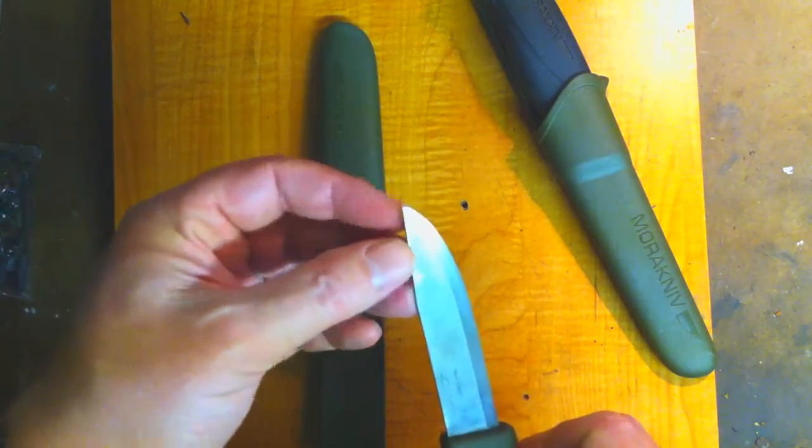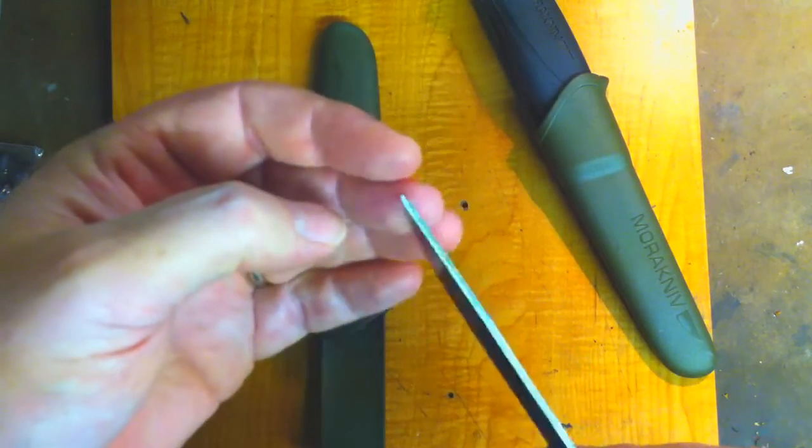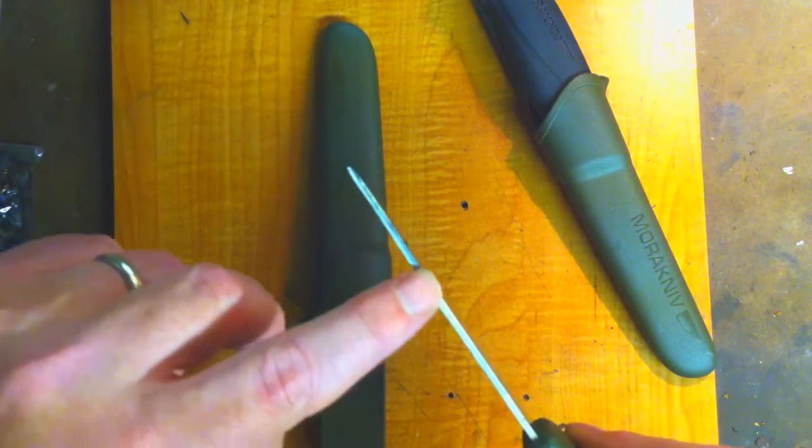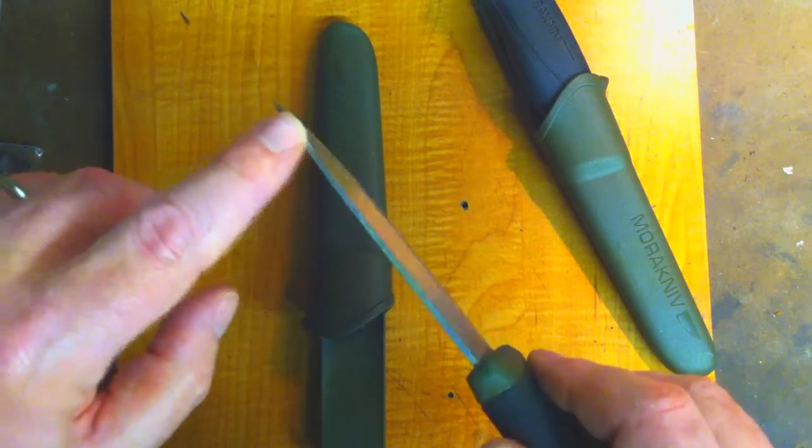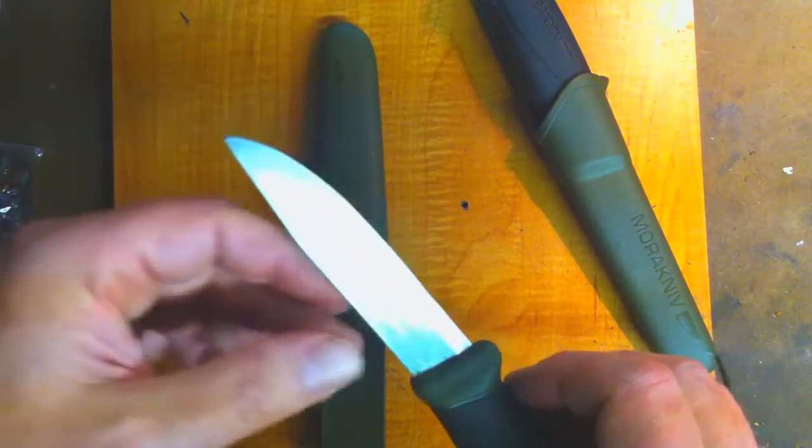I also dropped it on the tip and I had to reshape it just a little bit. That's what happens. So I flattened off the back of the spine so I would be able to strike a ferro rod with it.